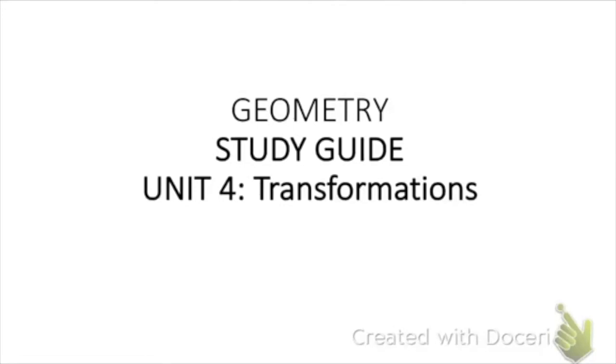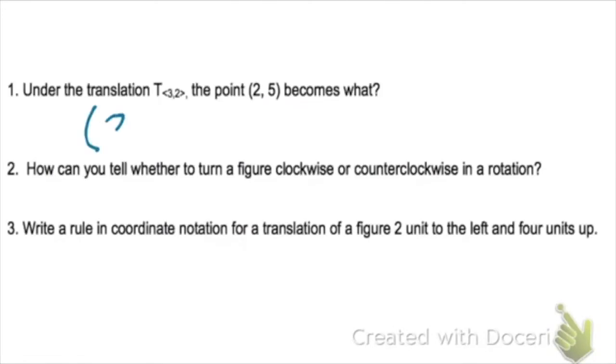So your study guide key for unit 4. Under the translation T₃,₂, the point (2,5) becomes (5,7). The translation T₃,₂ means 3 to the right and 2 up, so you add 3 to your x value and 2 to your y value.